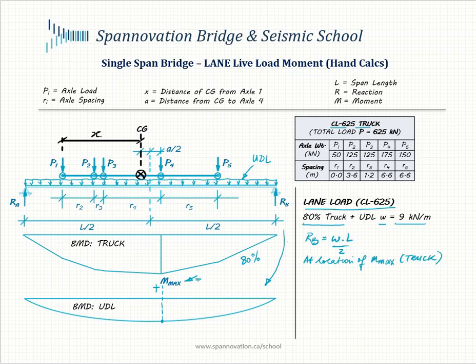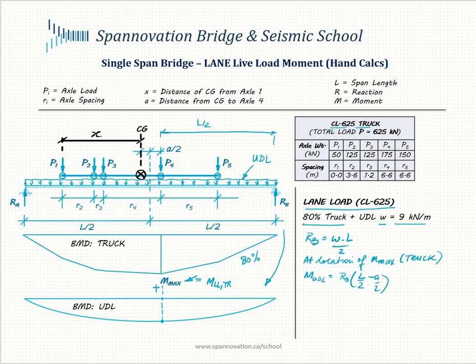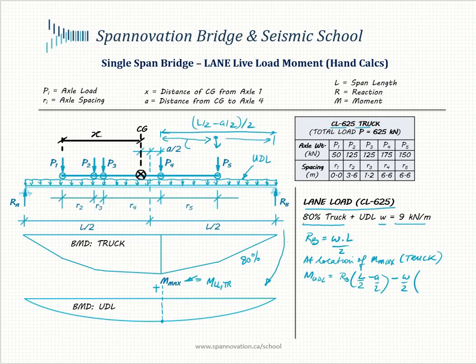We calculate the moment at the location of maximum truck moment, M_live_load_TR. The moment due to the UDL equals RB times (L/2 minus A/2) — the distance from RB to the point of interest — minus the clockwise moment of the UDL at that location, which is W times x squared over 2. Since the UDL's centroid sits at (L/2 minus A/2) divided by 2 from the point of interest, this simplifies to W/2 times (L/2 minus A/2) squared.